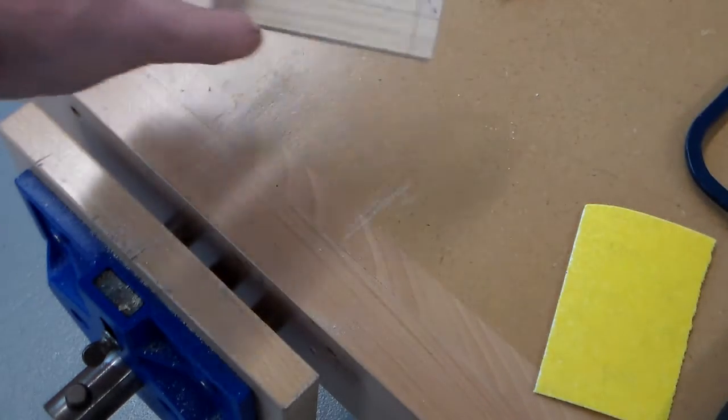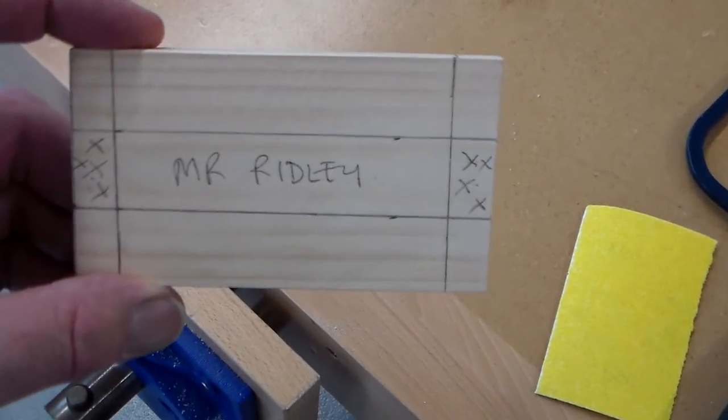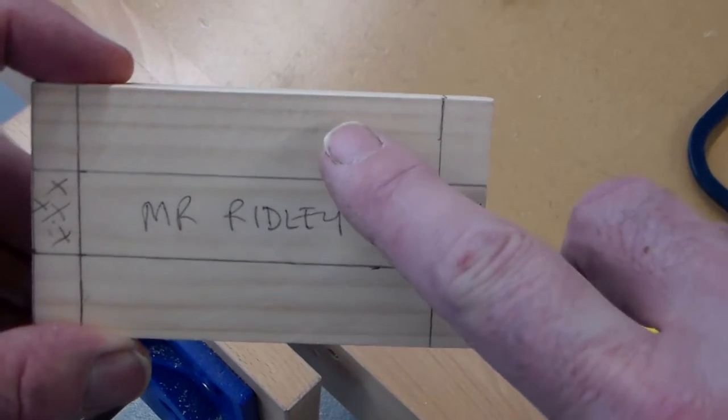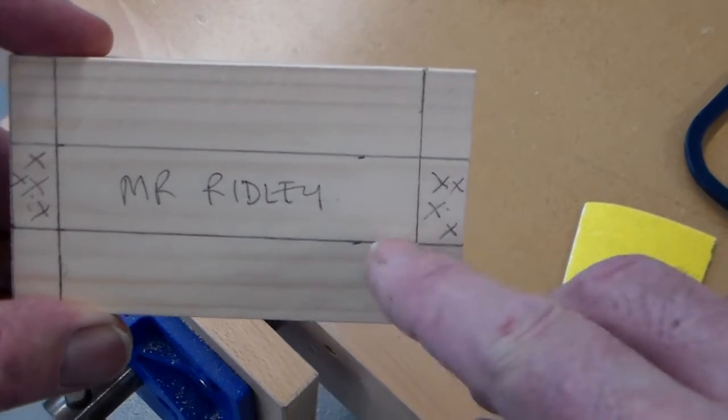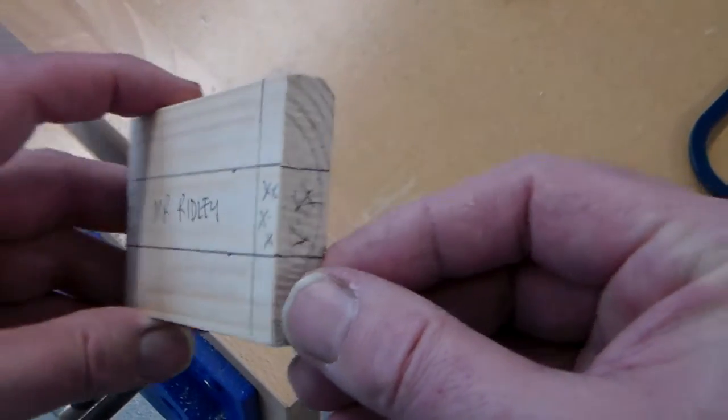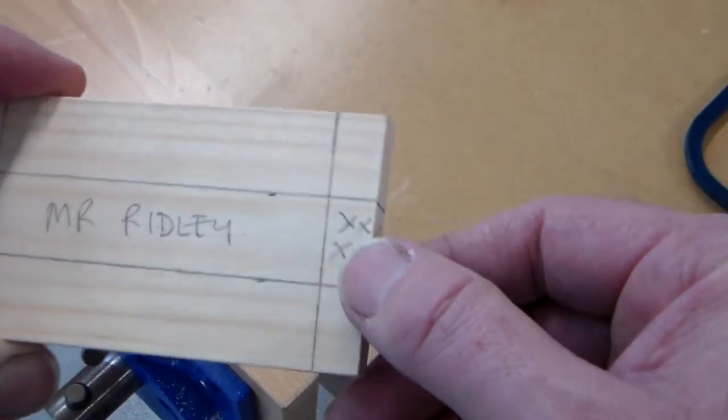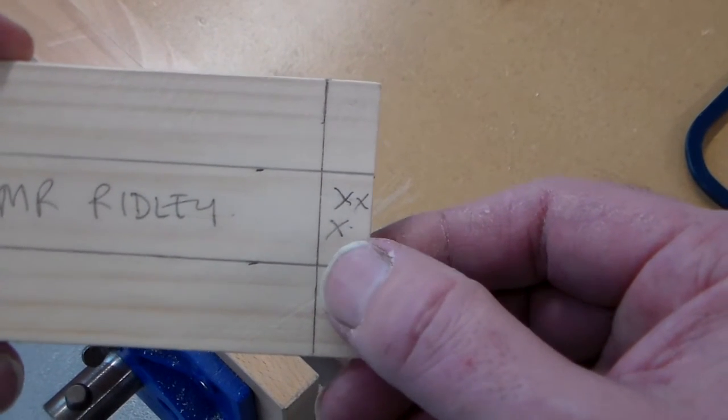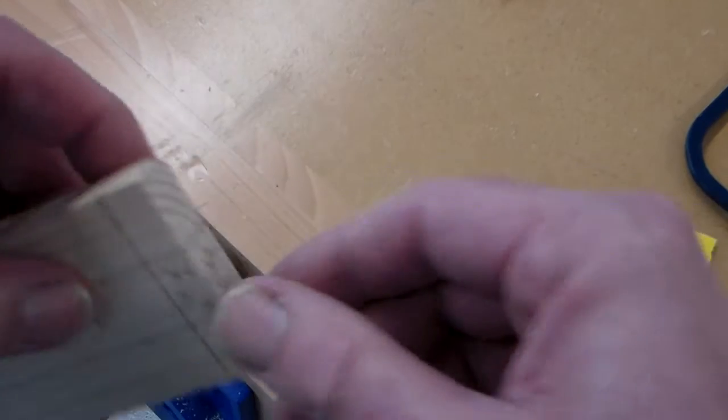Last time we looked at marking out the short sides and we divided it into three and marked the waste on here and on the end here. So we've got the waste marked here with the small crosses, which is the portion that we need to remove.